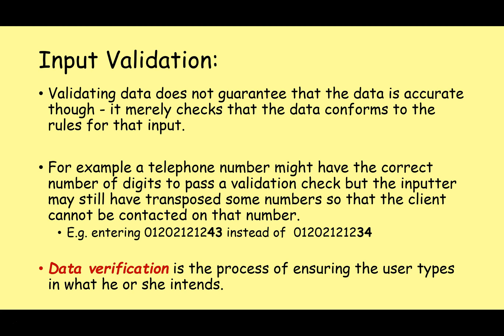However, validating data does not guarantee that the data is accurate — it merely checks that the data conforms to the rules for that input. Think about entering a telephone number: either accidentally or deliberately, the user might enter the wrong number. As long as it's the right length, input validation won't know whether they've entered a true phone number — just whether it is the appropriate length. So if I accidentally transpose digits, input validation will just check the length, then continue. It does not guarantee the accuracy of that telephone number.